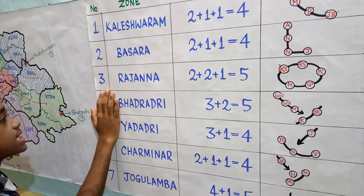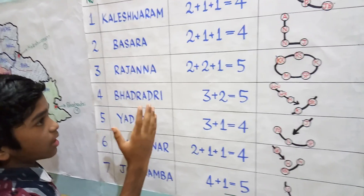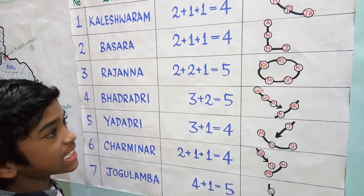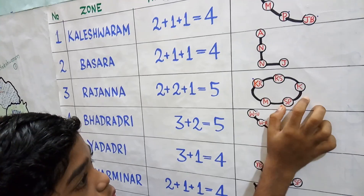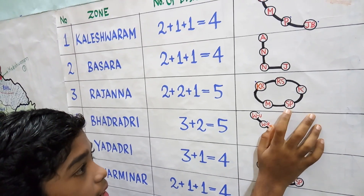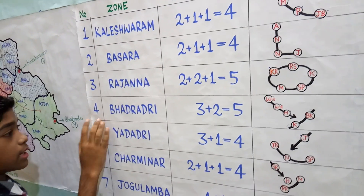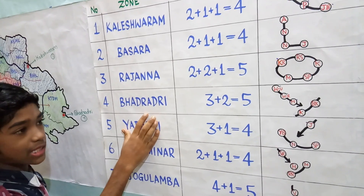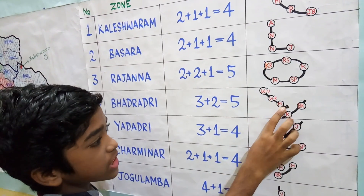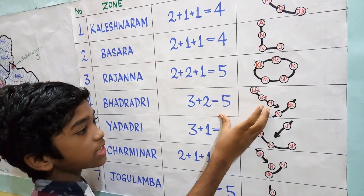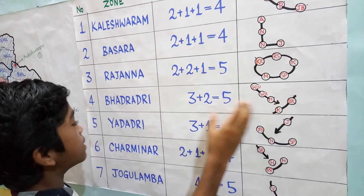Zone number 3, Rajana zone, has 5 districts: one is Kamareddy, 2 from old Karimnagar, and another 2 from old Medak. Zone number 4, Bhadradri zone, also has 5 districts: 3 districts from old Warangal and 2 districts from old Khamam district.